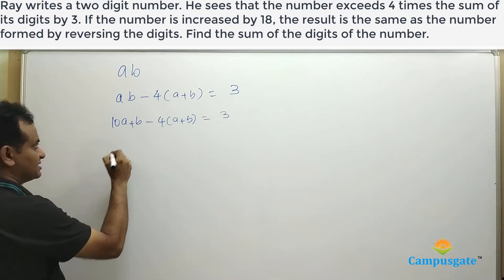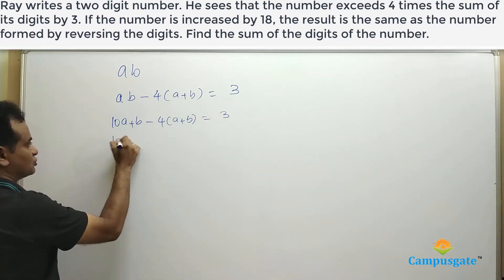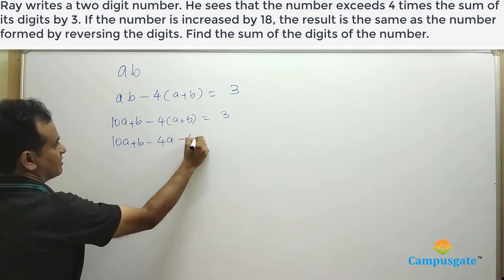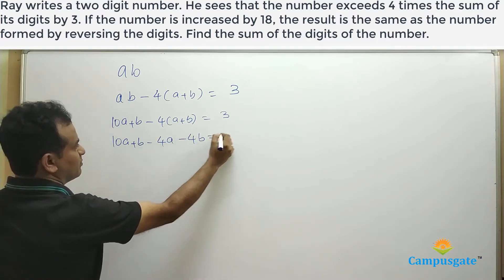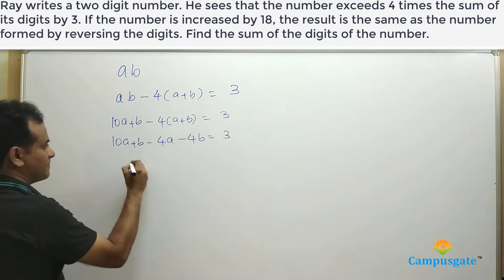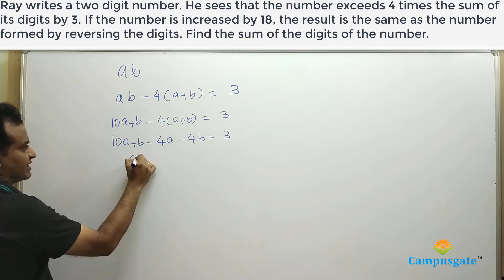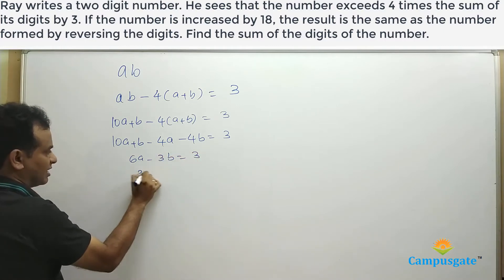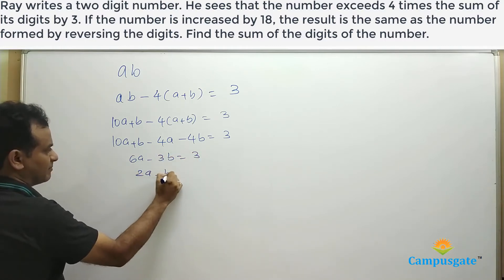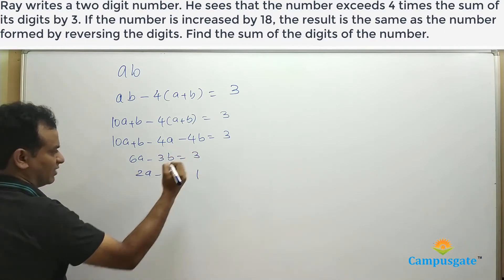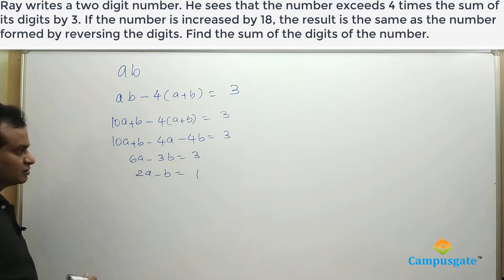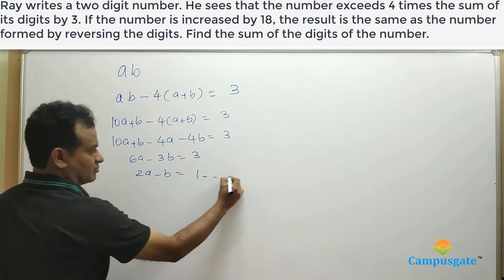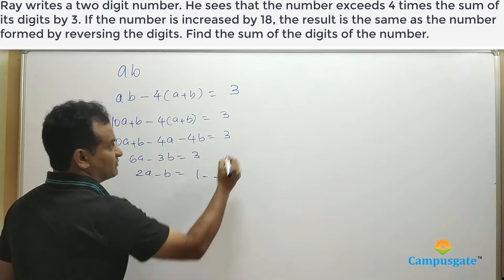Let us simplify this equation: 10A plus B minus 4A minus 4B equal to 3. Therefore, we get 6A minus 3B equal to 3, which simplifies to 2A minus B equal to 1. We got equation 1.